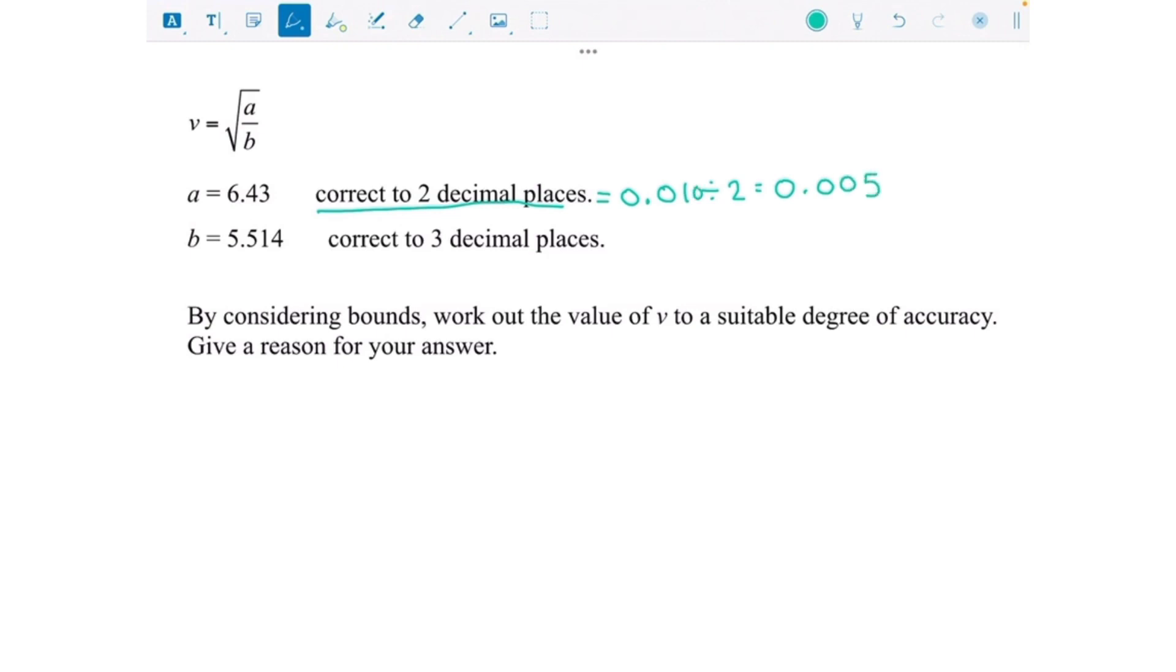If it's been rounded to the nearest 0.01, we half that number, which is 0.005. Think of that as 0.010 and then half of that is 0.005. We put that above and below, which gives us the upper and lower bound.